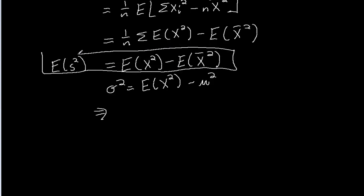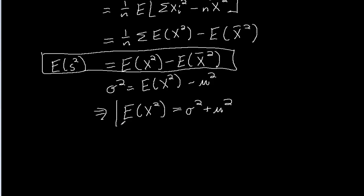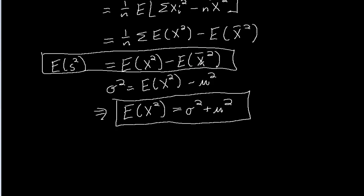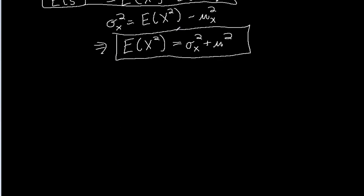I'm going to solve for E[X²] here. Flipping the sides and adding μ² over, we get E[X²] = σ² + μ². We will plug that in for the expectation of x squared. And then I can also think of x̄ as a random variable — x̄ is formed by taking n observations of the random variable x and then averaging them together. So now I'm going to do the same kind of thing with x̄.